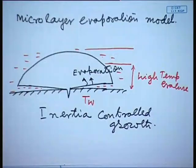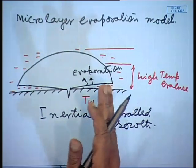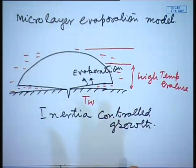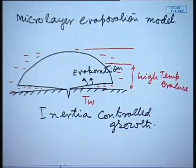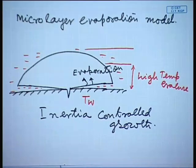This model is basically valid for inertia-controlled growth. A full bubble cycle can be described based on micro-layer evaporation, and the entire heat transfer can be found by integration. Some experimental data can be predicted very well by this micro-layer evaporation model. This is a more recent model compared to the earlier ones described, and it is also applicable.